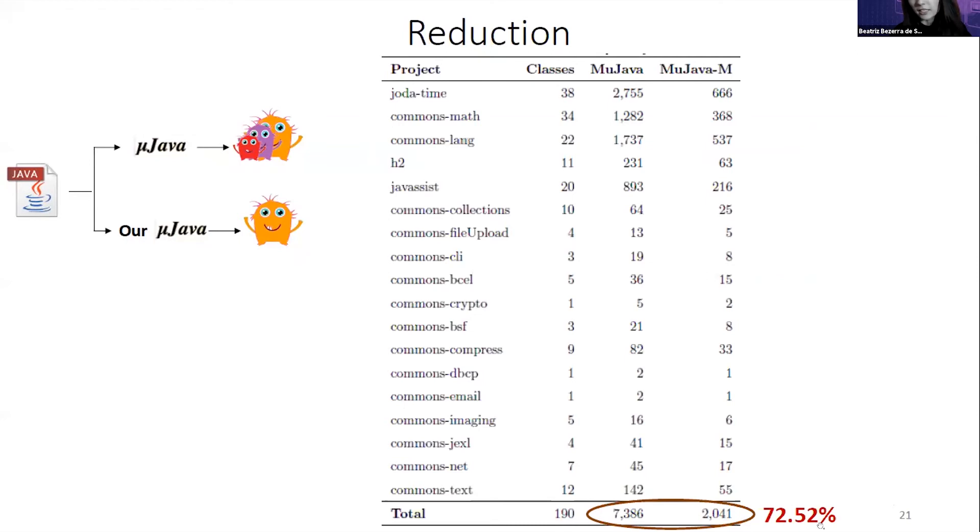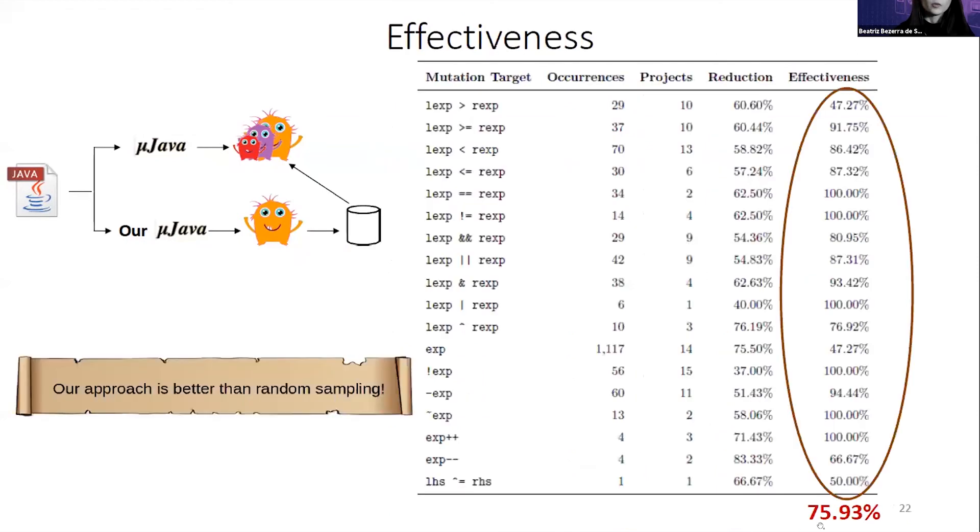We also evaluated the effectiveness of our technique, and our technique correctly discards mutations in more than 75% of the cases and is better than random sampling. So our technique presents a good balance between the effectiveness and the effort required to find redundant mutations.